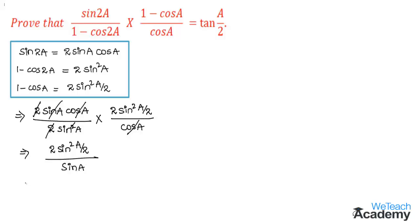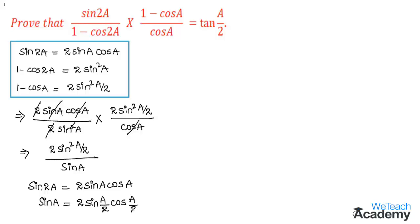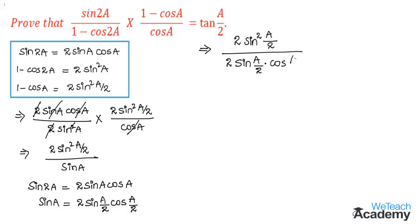Again, using the submultiple angle formula — where the angle 2a is divided by 2 — we get sin a equal to 2 sin a by 2 into cos a by 2. Replacing this in the denominator, we get 2 sin squared a by 2 in the numerator divided by 2 sin a by 2 into cos a by 2.